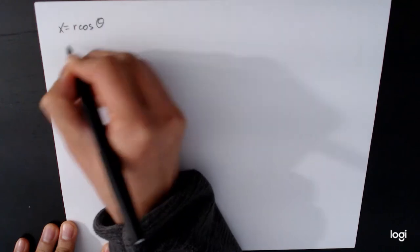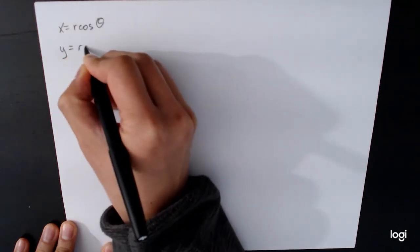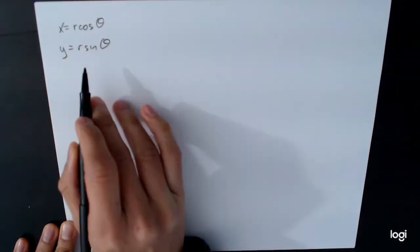x equals r cosine theta, y equals r sine theta, and these are the formulas to convert from polar to rectangular. If you want to go the other way around,